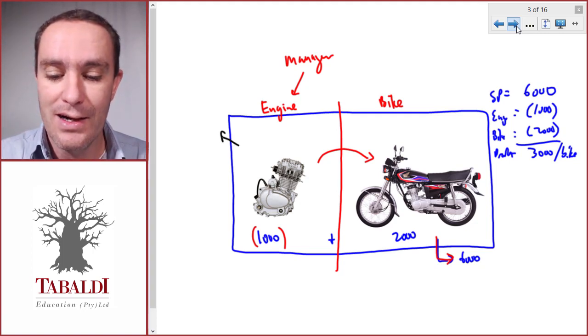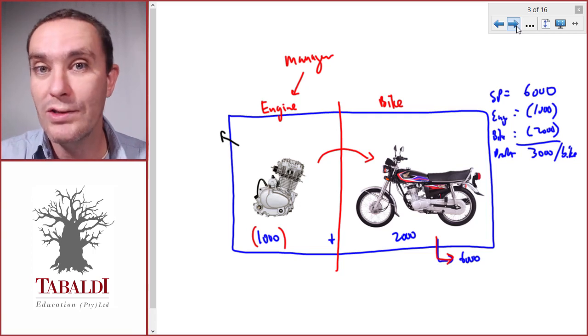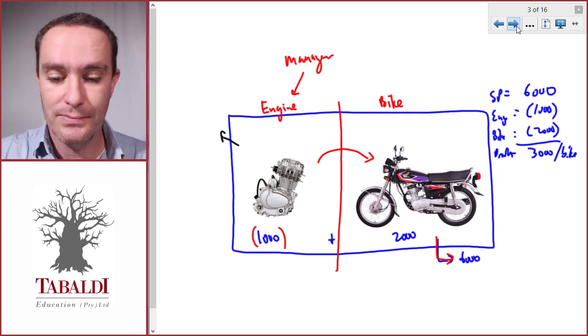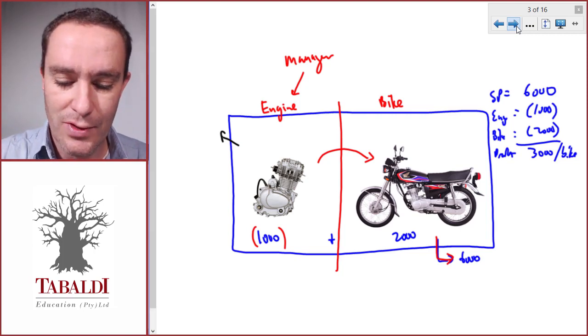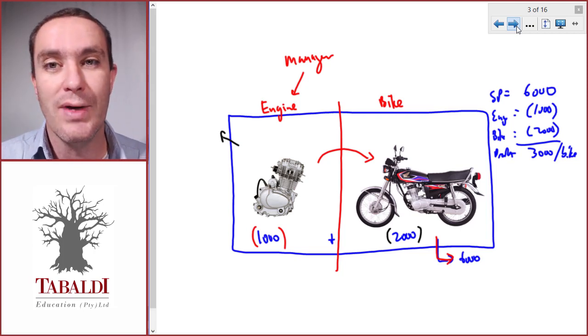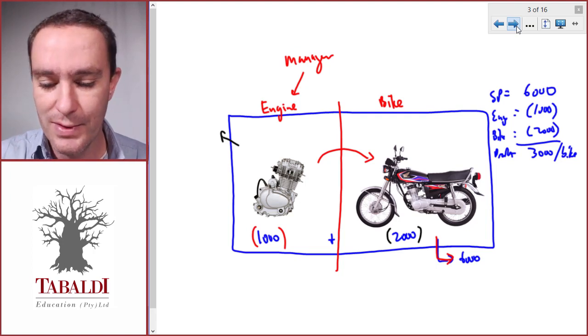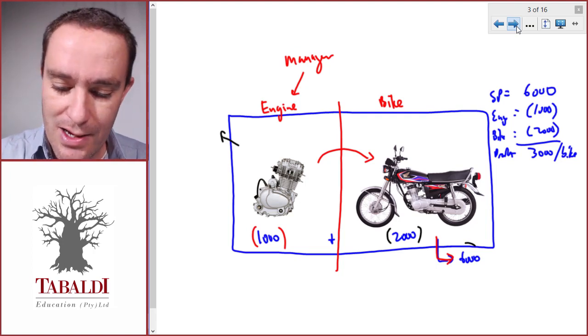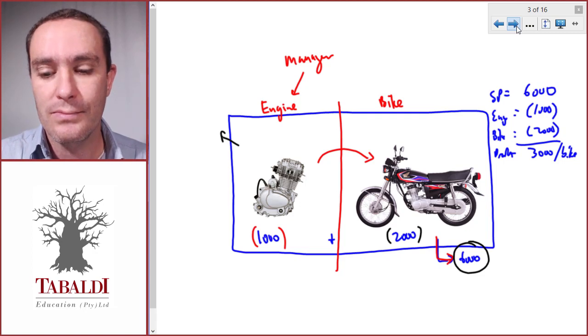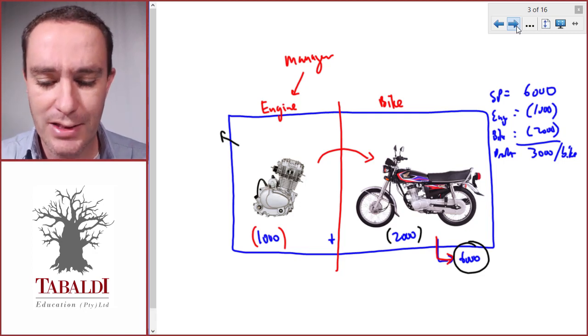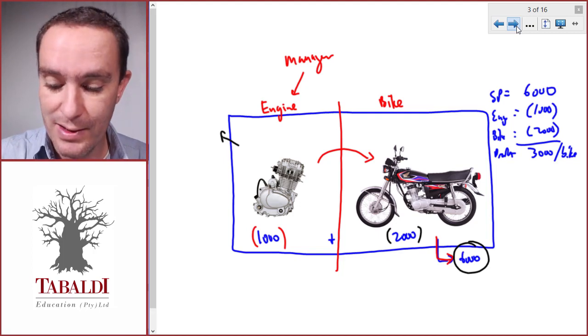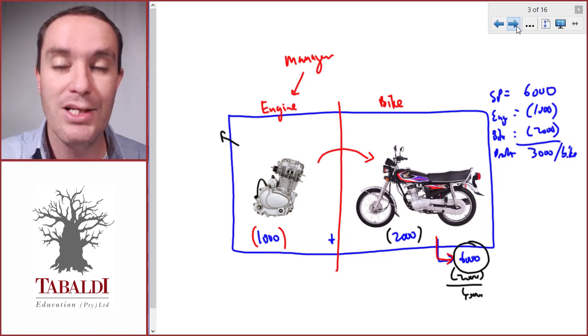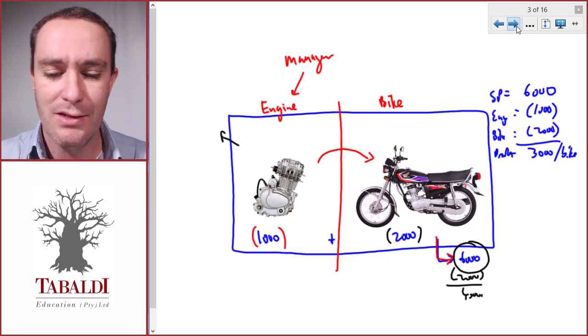What about the bike division? The bike division's only cost is the two thousand to make the frames, wheels, etc., and they earn all the revenue on the full bike, which includes the engine from the engine division. So the bike division's profit would be six thousand less the cost of two thousand, which is four thousand, whereas the engine division makes a loss of a thousand. This is hardly fair for the manager of the engine division.